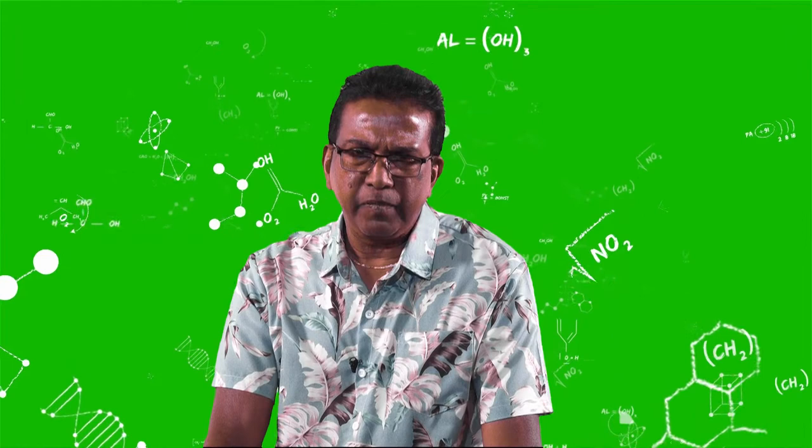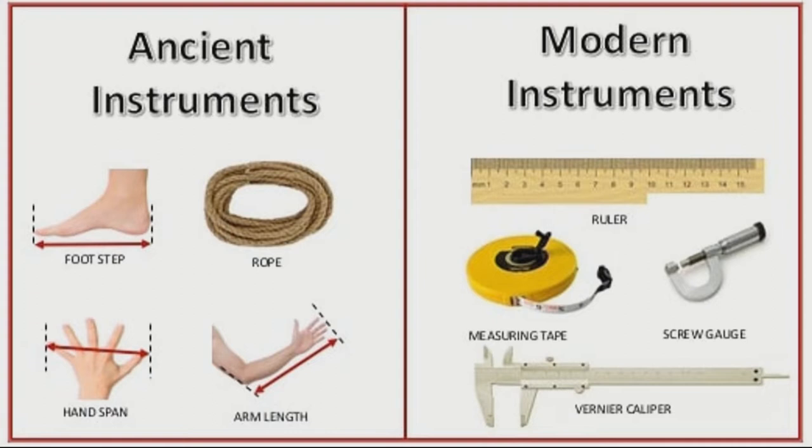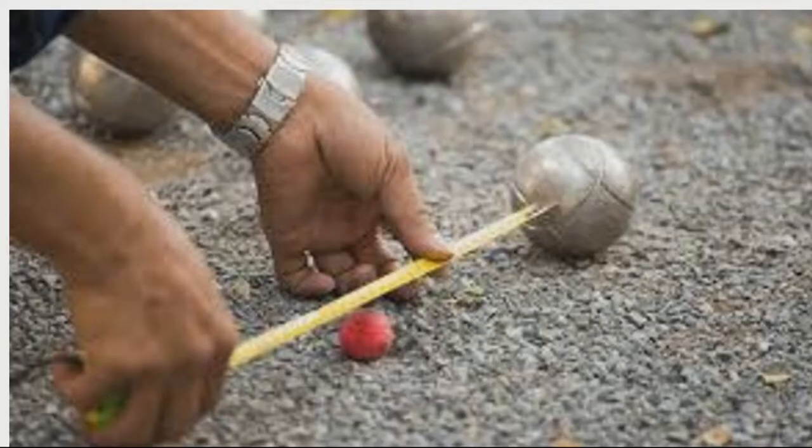Now, in the past, we used to measure using parts of our body, the hand span, the foot length, the rope, all these. And you will realize these were not accurate. We have modern measuring instruments: tape, micrometer, ruler, etc.